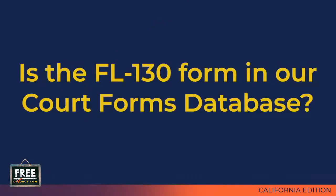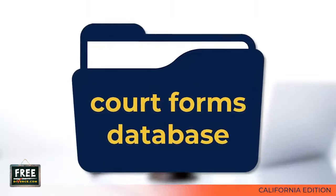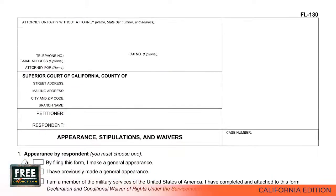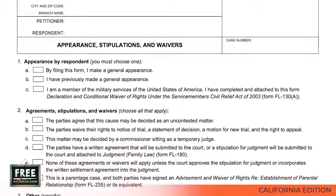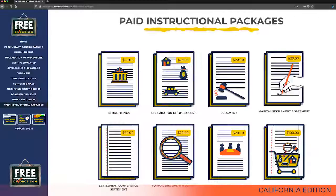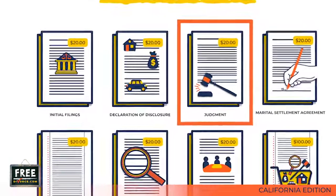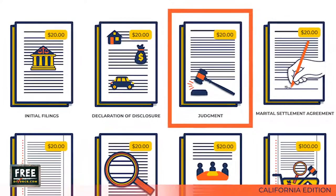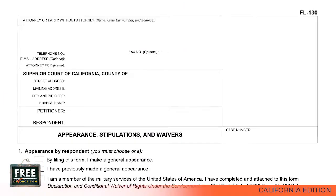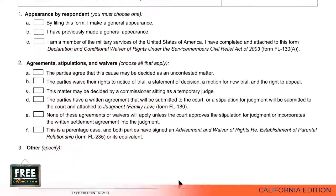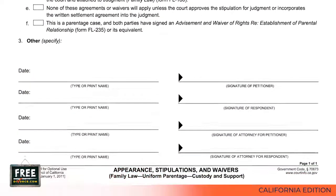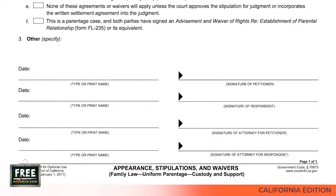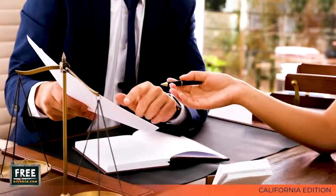You can find a blank FL-130 in our court forms database. The FL-130 is a one-page form. Pull up the FL-130 from our database and check the appropriate boxes. If you purchased our judgment video package, one of those videos will walk you through how to fill out the FL-130. After you have filled out the FL-130, print it. You and your spouse will each date and sign it, then set it aside. The FL-130 will be filed with the court clerk when you file your divorce judgment.